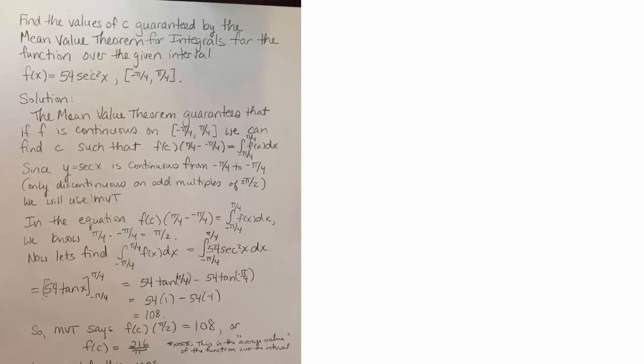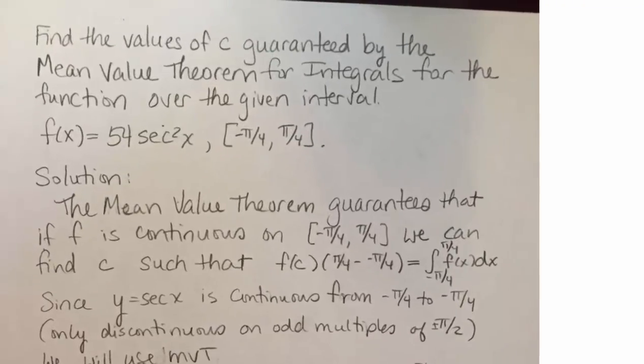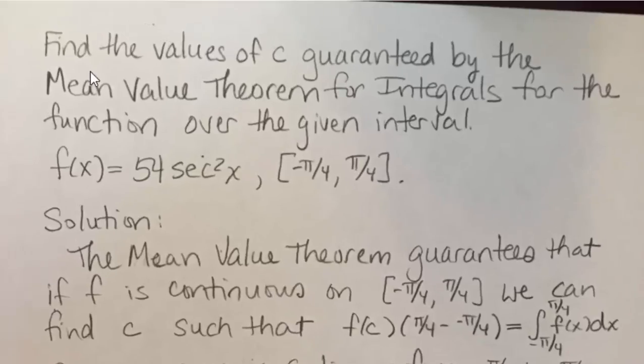And the motivation for this was a problem that we were working in my calculus class. Find the values of c guaranteed by the mean value theorem for integrals for the function over the given interval. And the function was 54 secant squared x, and the interval was negative pi over 4 to pi over 4.